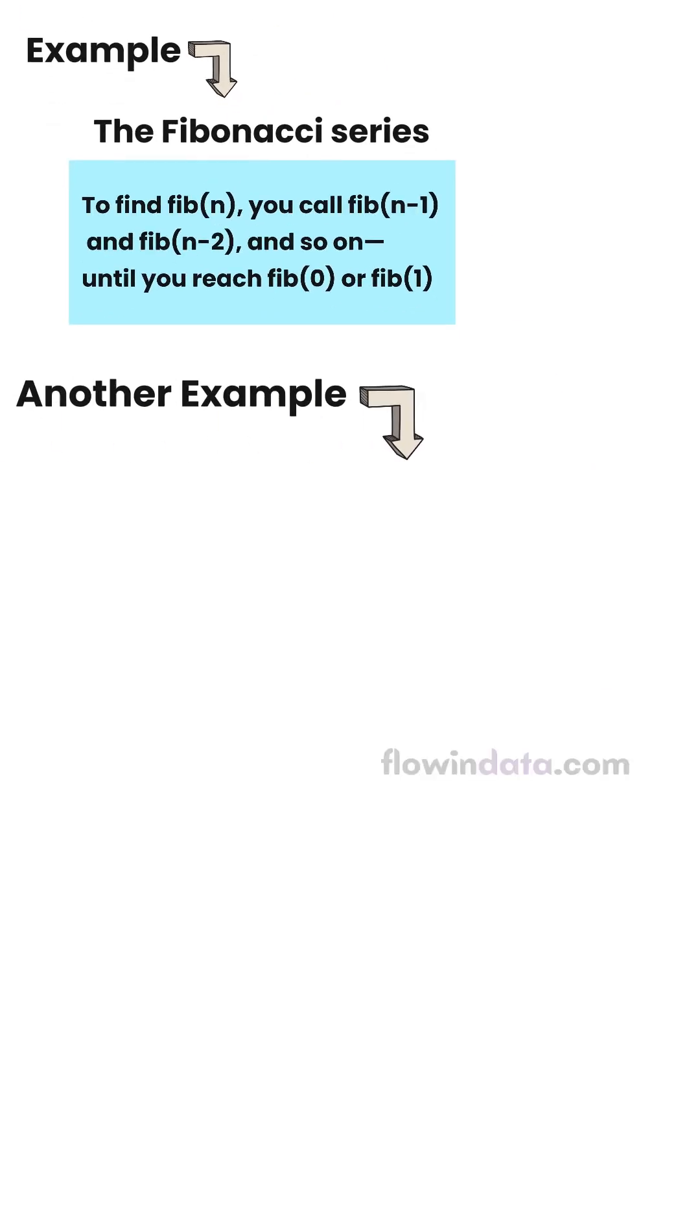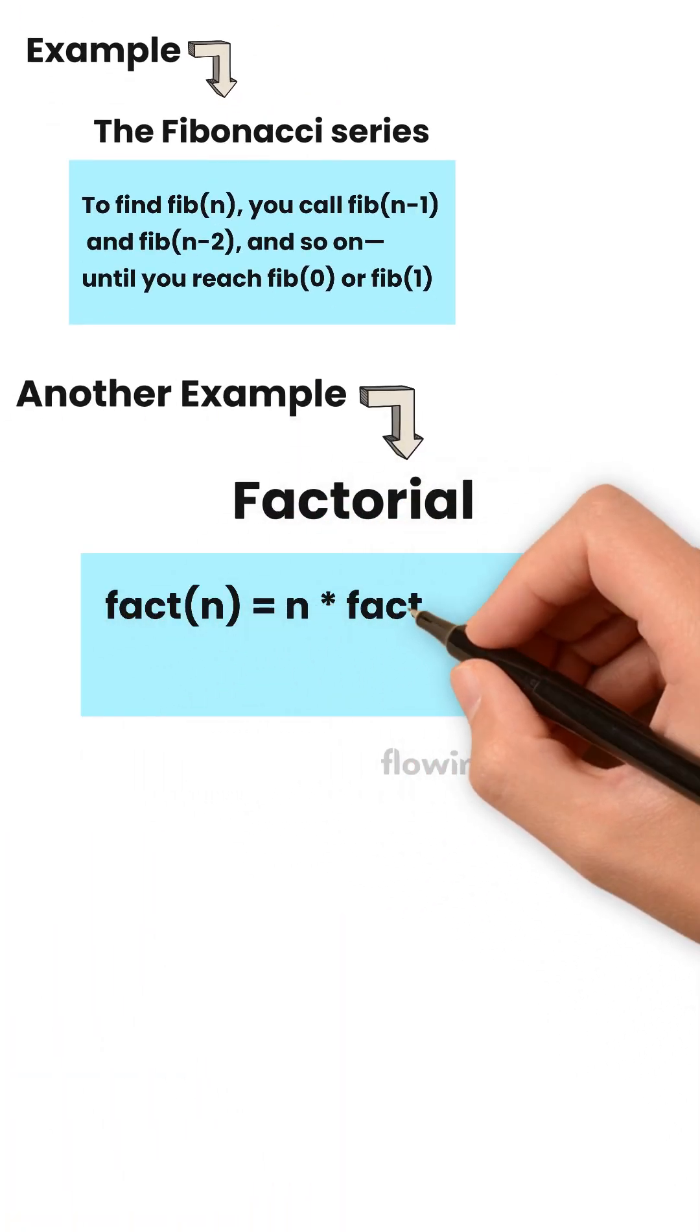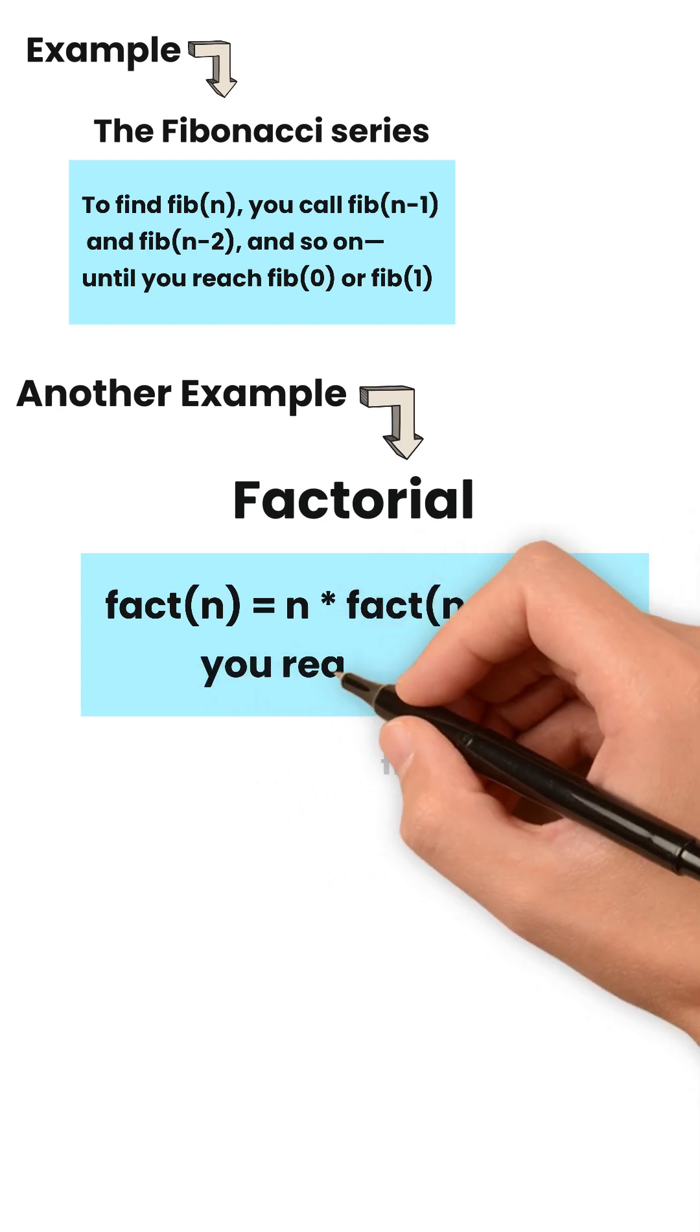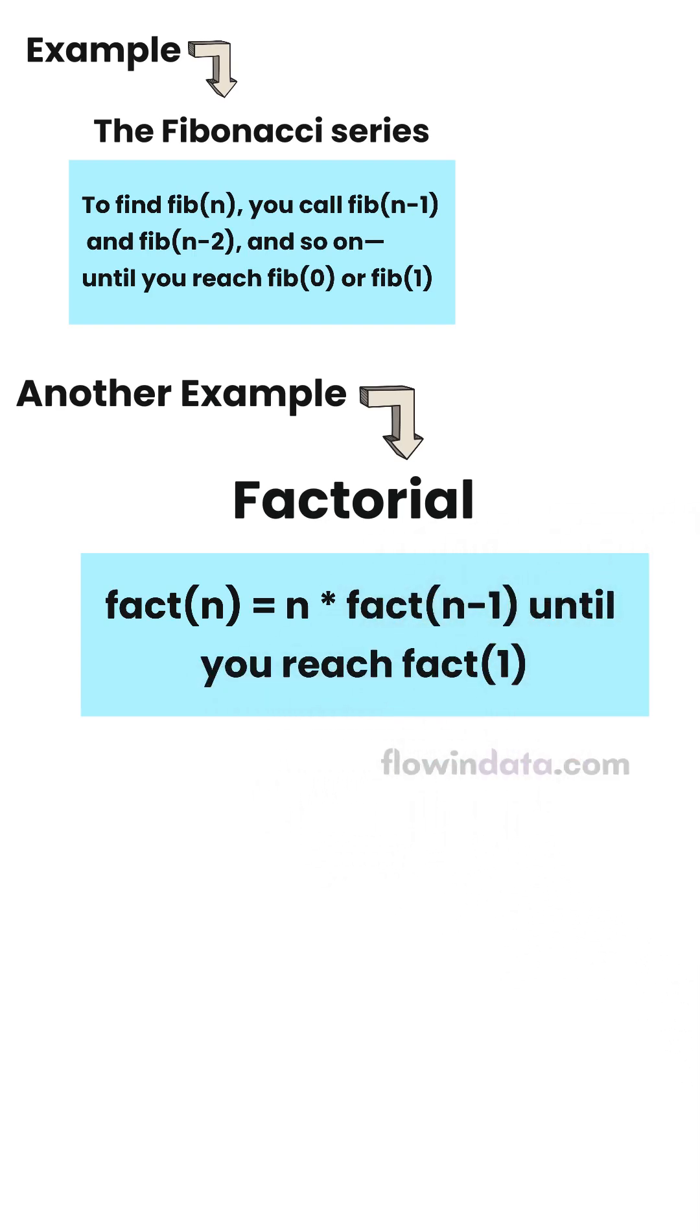Another example, factorial. Fact n equals to n multiply fact n minus 1 until you reach fact 1.